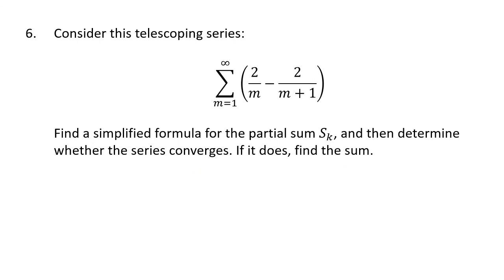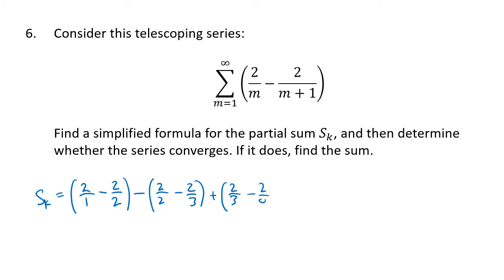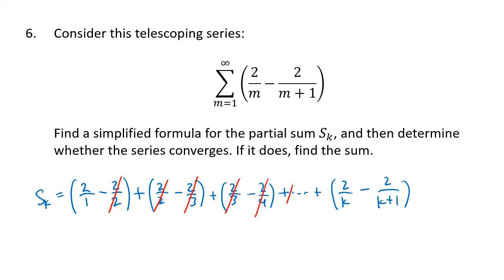Let's do one more telescoping series example. s sub k starts with the first term 2/1 − 2/2, then the second term 2/2 − 2/3, then 2/3 − 2/4, and so on, ending with 2/k − 2/(k+1). We get a whole bunch of canceling — the hallmark of a telescoping series. The −2/2 cancels with the +2/2, the −2/3 cancels with the +2/3, the −2/4 cancels with the next 2/4, and so on. The 2/k cancels with what came before it. So we end up with 2/1 minus 2/(k+1), also written as 2 minus 2/(k+1).